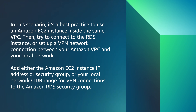Then try to connect to the RDS instance, or set up a VPN network connection between your Amazon VPC and your local network. Add either the Amazon EC2 instance IP address or security group, or your local network CIDR range for VPN connections, to the Amazon RDS security group.